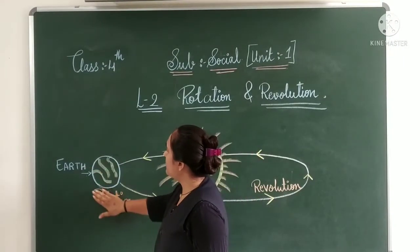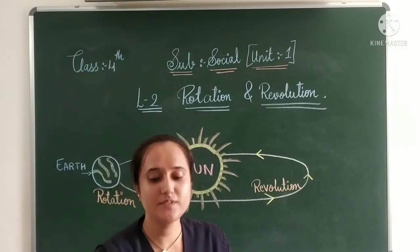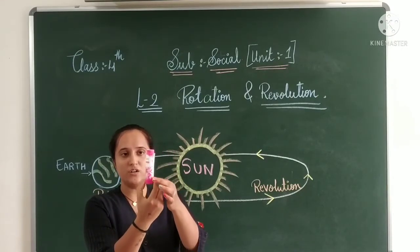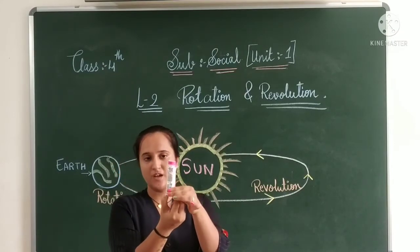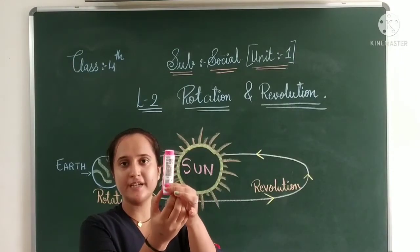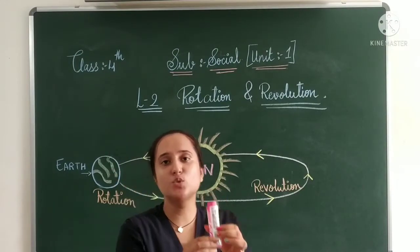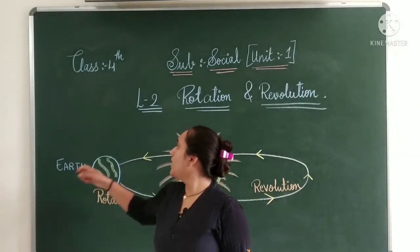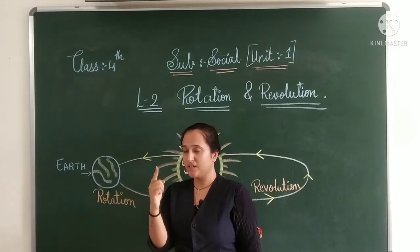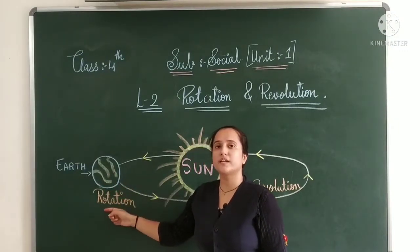Here you can see our Earth planet. It is staying in one place and spinning like this. It is spinning from west to east — it stays in its own place and rotates. That movement is called rotation.